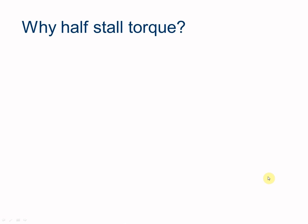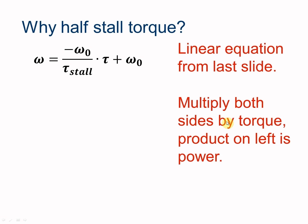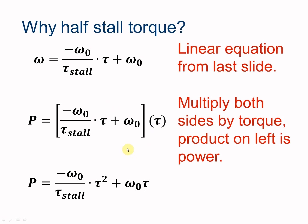We're going to multiply both sides by the torque. Torque times omega is power. We need to distribute this inside of the parentheses, and so we end up with negative omega naught over our stall torque (that's our slope) times the torque squared, plus omega naught times the torque. What shape is this? This is a down-facing parabola. y equals x squared gives you a parabola, but we got this negative sign here, so this is going to give us a down-facing parabola.